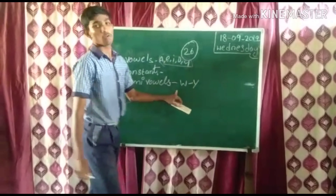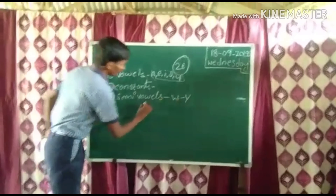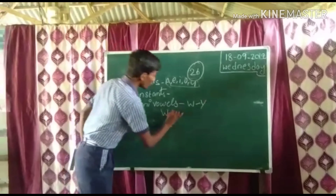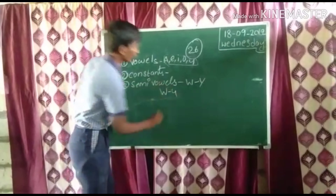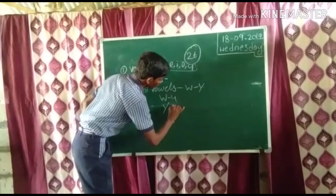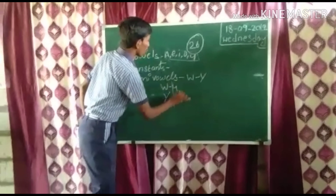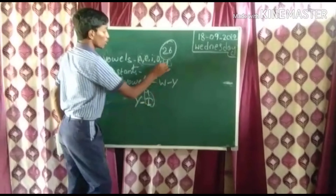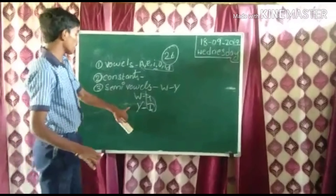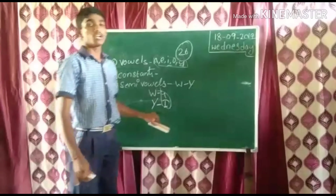You may have a doubt. W and Y are semi-vowels. When we pronounce W, we pronounce U also. And when we say Y, it is pronounced with I also. In these two, U and I are also vowels. See here — U and I. That's why W and Y are semi-vowels.